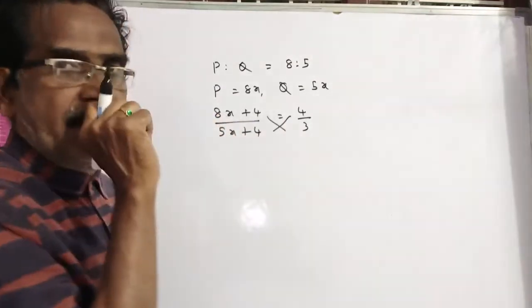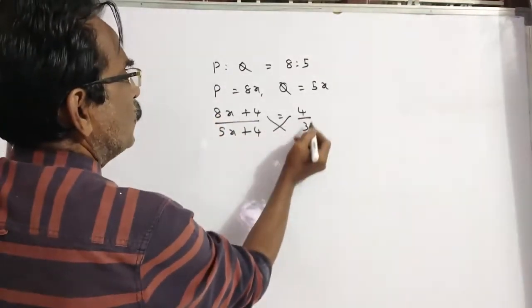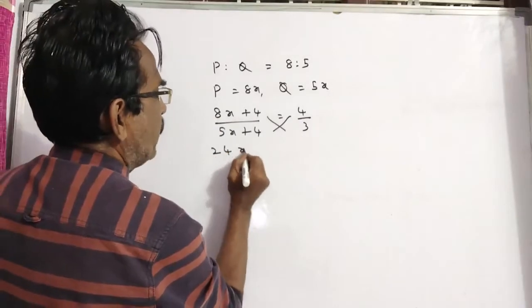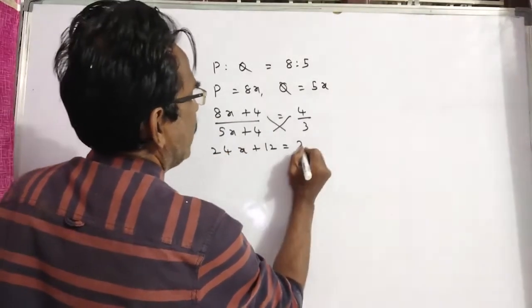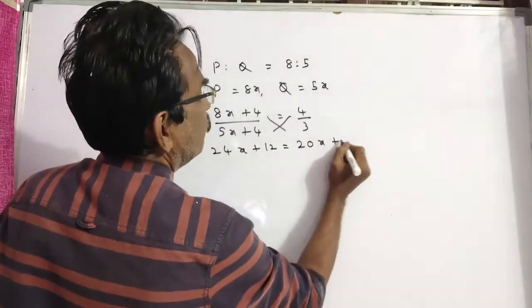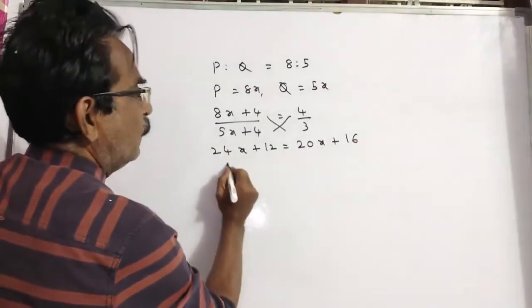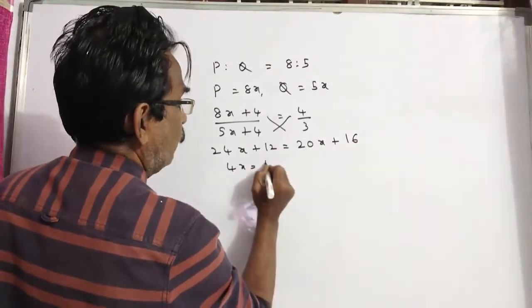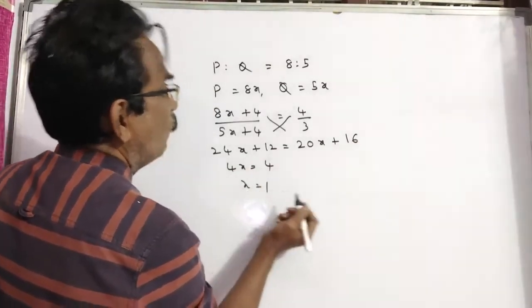Now let us find the ages of P and Q. So, 3 into 8x plus 4, 24x plus 3 into 4, 12, is equal to 4 into 5x plus 4, 20x plus 4 into 4, 16. 4x is equal to 16 minus 12, 4. X is equal to 1.